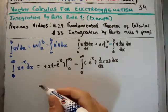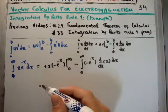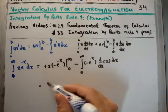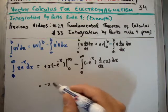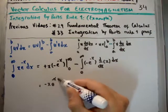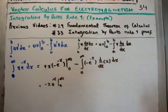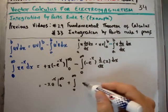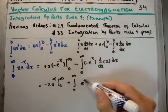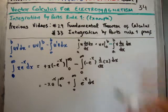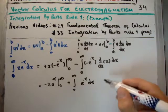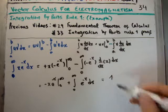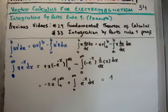The boundary term is simply going to be minus x e to the minus x integrated at our boundaries 0 and infinity. And then we're going to have plus the integral of e to the minus x dx, because d/dx of x, as I said a minute ago, is 1. And if you plug in the boundaries there, you'll find that the answer is equal to plus 1. Very straightforward.